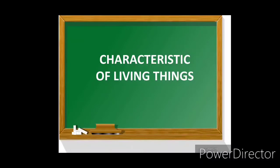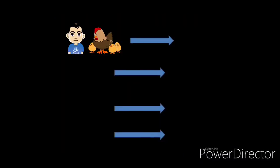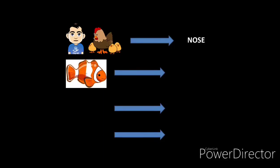Now let's study about characteristics of living things in detail. We will learn how living things breathe. Humans and animals breathe through their nose. Fish do not breathe through their nose but they have gills to breathe.